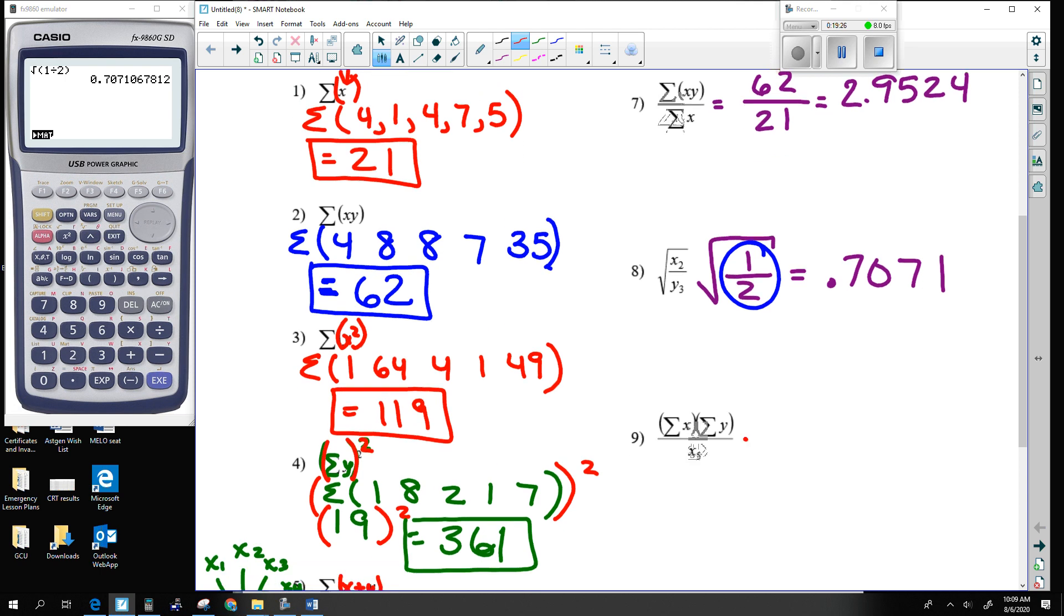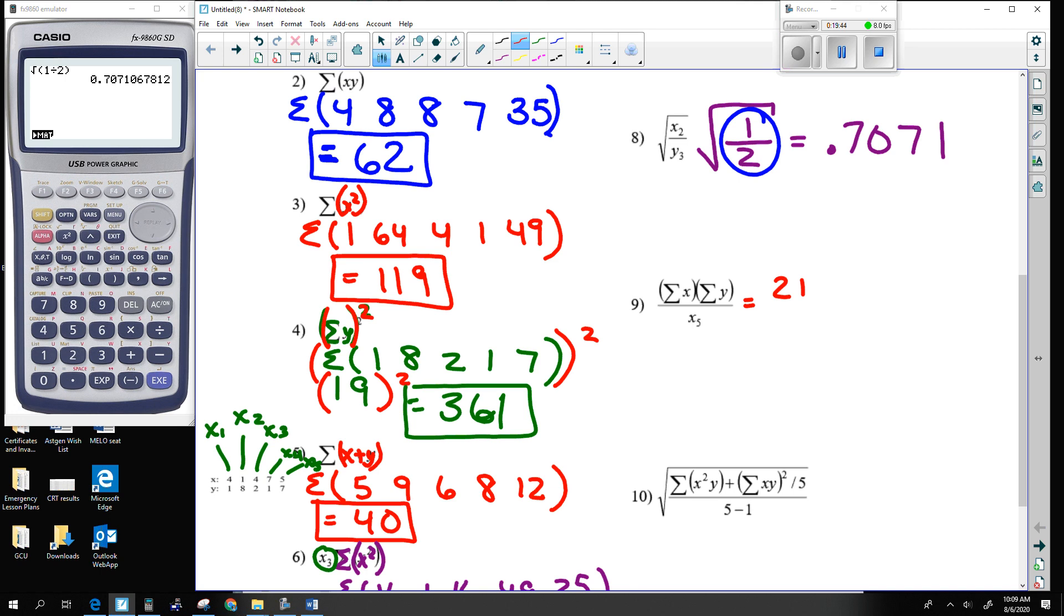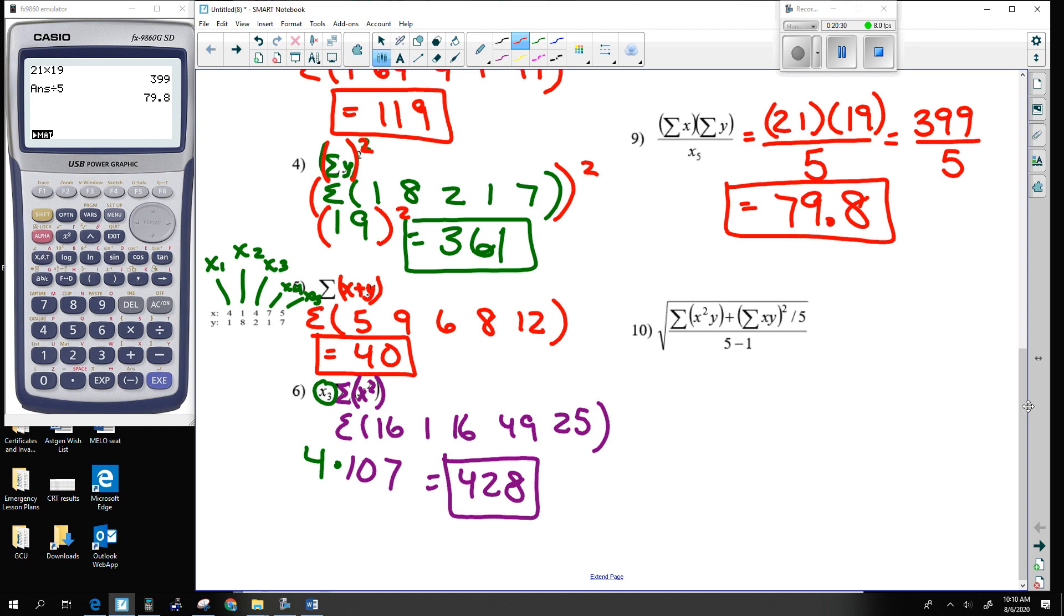Number 9. The summation of X is 21. I got that from number 1. Summation of Y, I kind of did it in number 4. In number 4 I summed Y, which came out to be 19, and then I squared it. So I have that X sub 5. X sub 5 is the fifth number of X, which is the number 5. So that is my math problem. So my numerator is 21 times 19, my denominator is 5. And so 399 divided by 5 is 79.8.